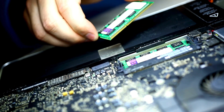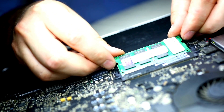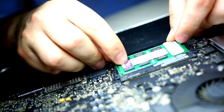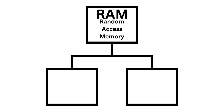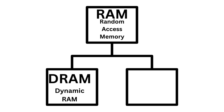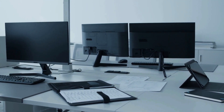First up, we have RAM, or random access memory. This type of memory is volatile, meaning it loses its data when the power is off. RAM is primarily used for temporary storage while your computer or device is running. There are two main types: DRAM (dynamic RAM) and SRAM (static RAM). DRAM is slower but more cost-effective, making it ideal for main memory in computers. SRAM is faster and more reliable but also more expensive, commonly found in cache memory for CPUs. Modern computers often have several gigabytes of RAM, allowing for multi-tasking and running complex applications smoothly.